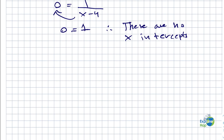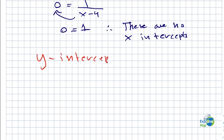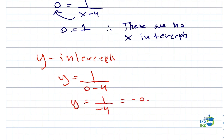Now let's find out the y intercepts. For the y intercepts, we basically have to plug in x as 0. So if you plug in x as 0, we get y equals 1 over 0 minus 4, which is y equals 1 over minus 4, which is equal to minus 0.25. Therefore, the y intercept is equal to minus 0.25.